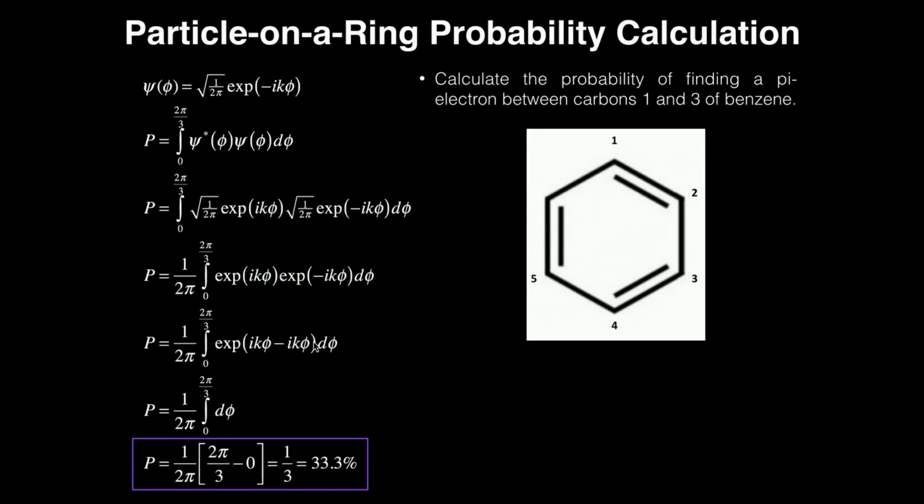And what is any number to the zero power, including e? e to the zero is one. So I no longer have an exponential function. All I'm left with is d phi. That's a pretty easy integral to do. It just becomes phi evaluated from zero to two pi over three.